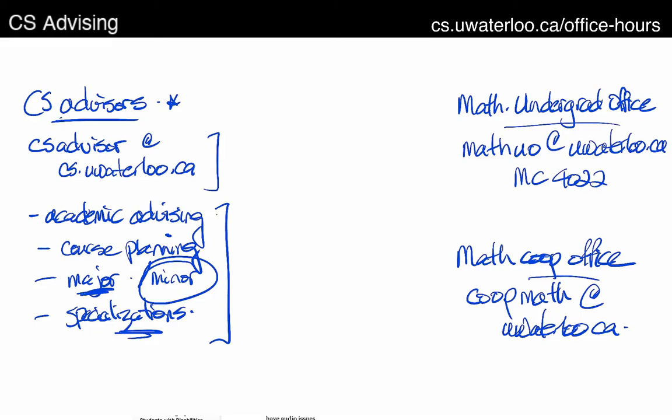In short, we're responsible for anything related to CS courses, but just CS courses. As a CS advisor, I can't give you detailed advice on courses outside of computer science — and that even applies to math, like statistics and so on. Those are managed by other advisors.